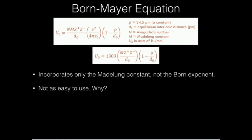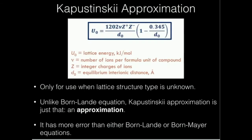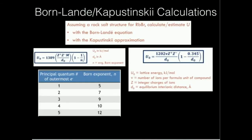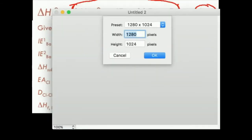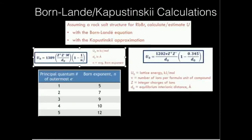This over here is called the Born-Meyer equation — we're going to look at that in another video. Right now I want to go to a calculation. Here's the problem we're going to be looking at: assuming a rock salt structure for rubidium bromide.